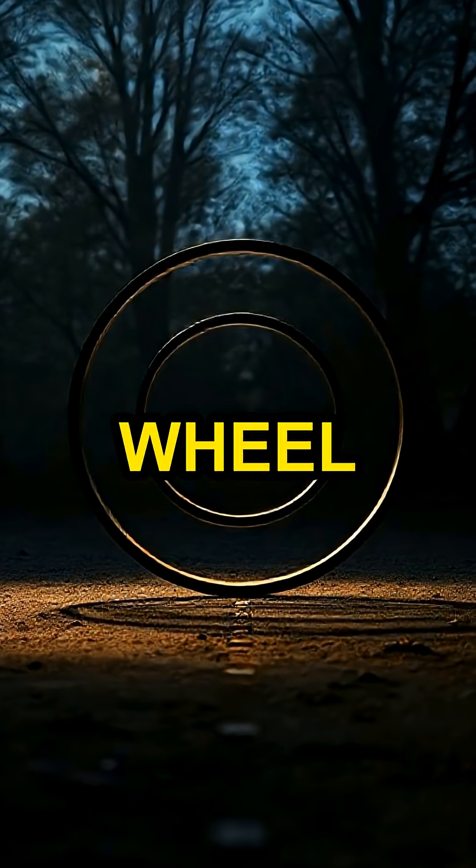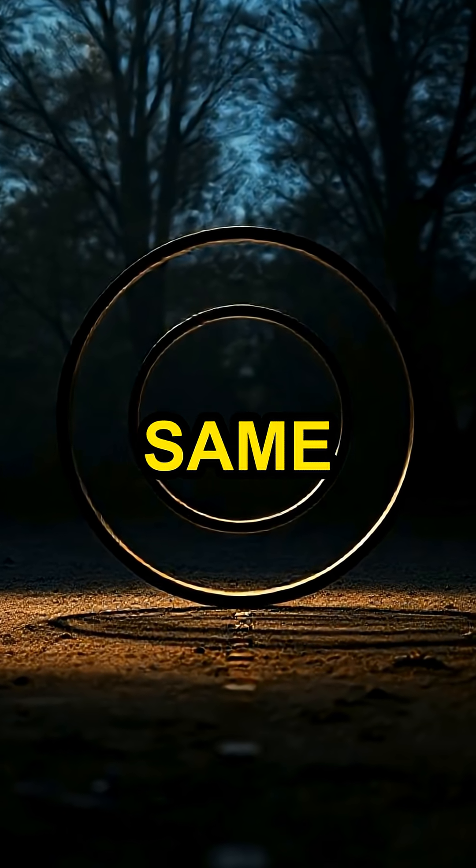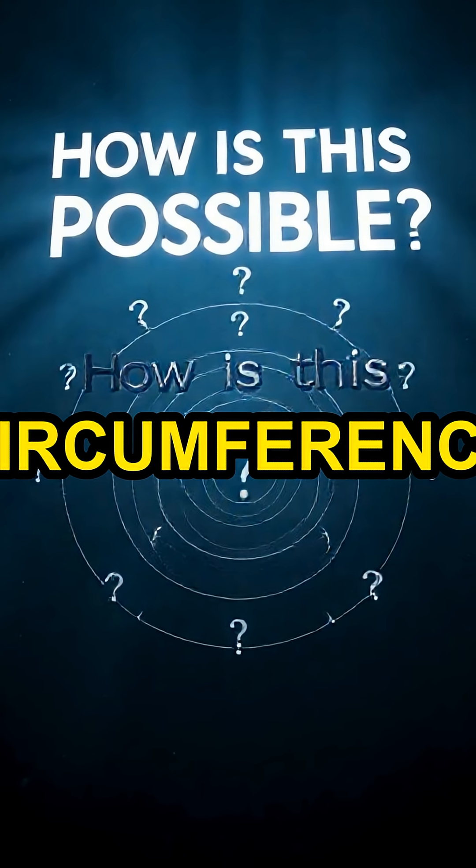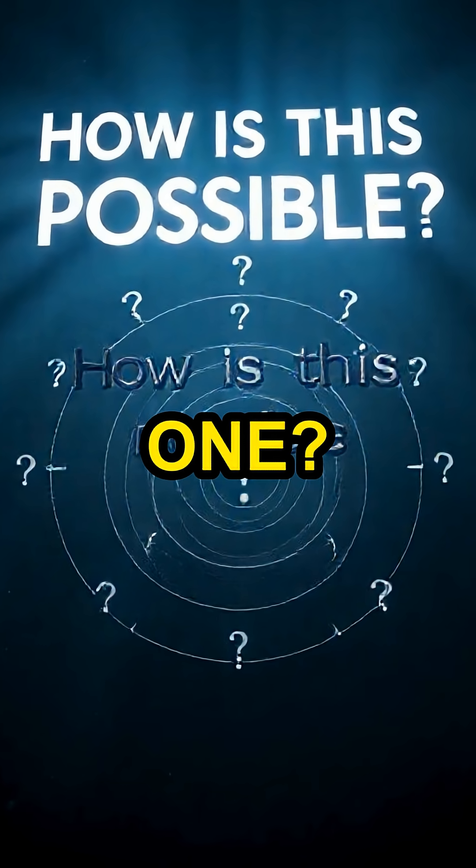But because the smaller wheel is attached, it also appears to travel the exact same distance. How can a smaller circle with a smaller circumference possibly cover the same ground as a larger one?